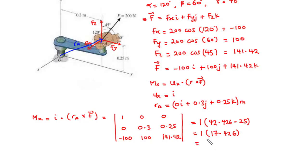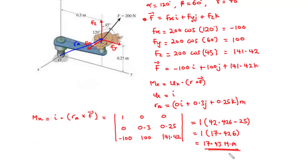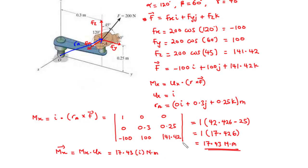Rounding up, we have 17.43 Newton meters. From the question we were only asked to find the magnitude of the moment, so that is 17.43 Newton meters. If we are asked to represent the moment about the x-axis as a Cartesian vector, that equals Mx times the unit vector along x, which is simply 17.43i Newton meters.